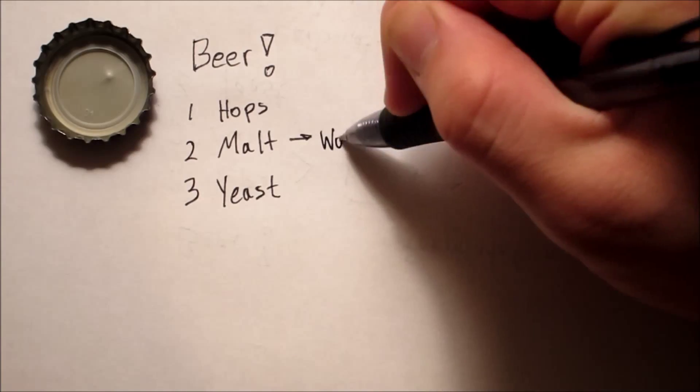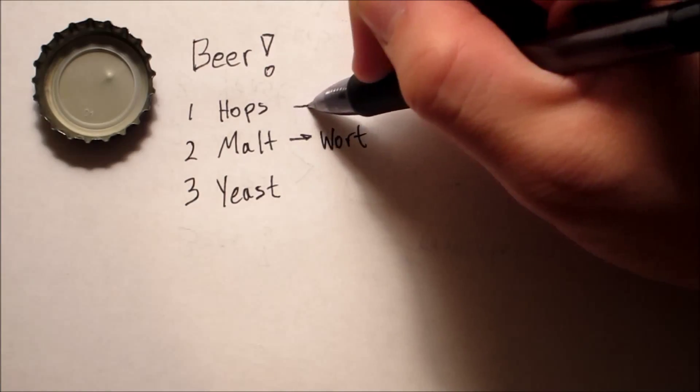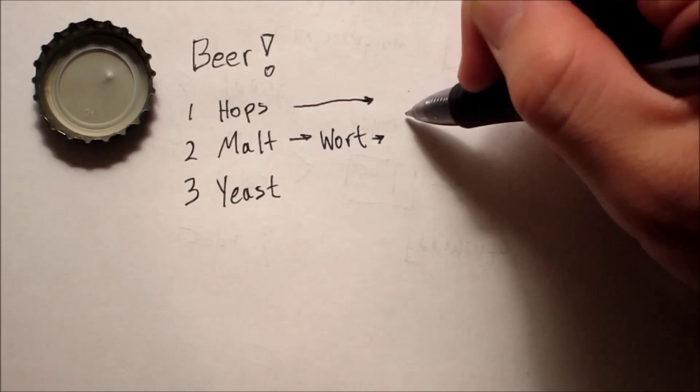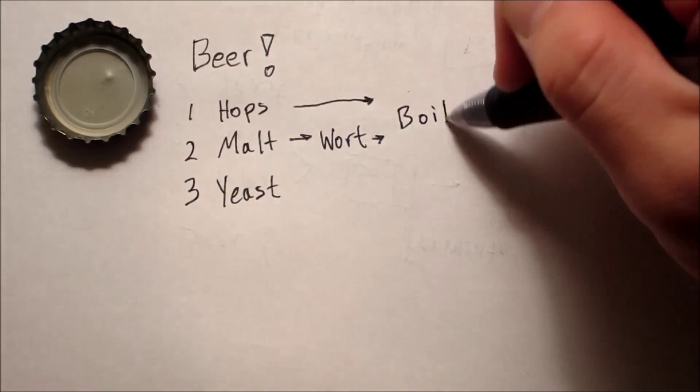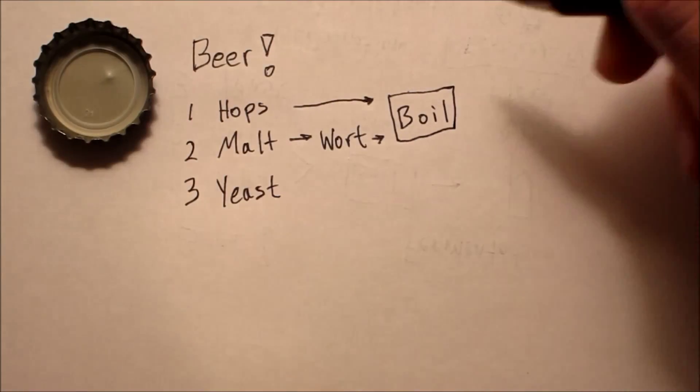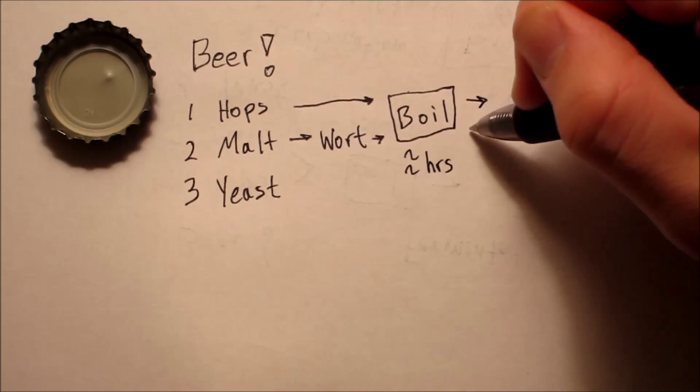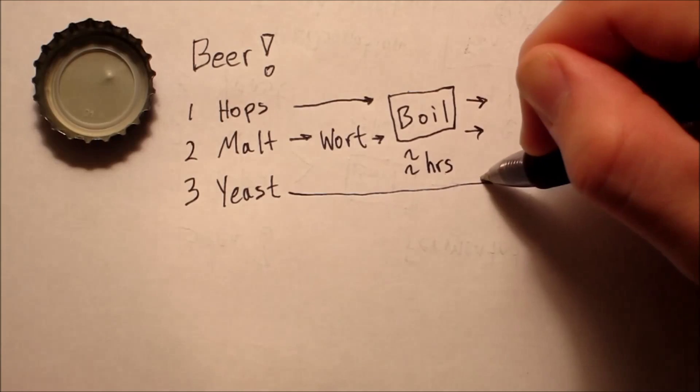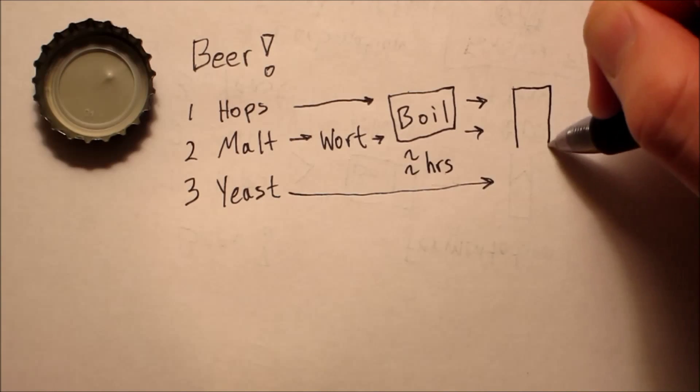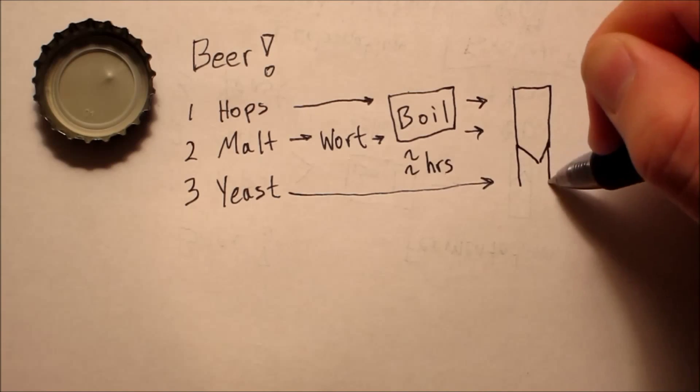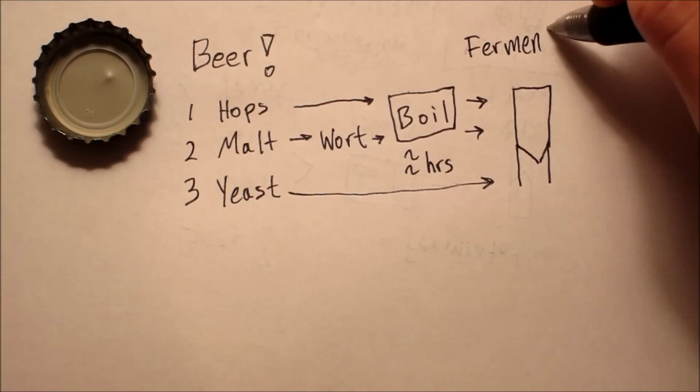The first step involves soaking or mashing the malt in water to get a tea-like substance called wort. Then, together with the hops, the mixture is boiled to obtain the desired taste and smell. After the boil, the wort is cooled to about room temperature and the yeast is added, or pitched, with the wort into a container for fermentation.